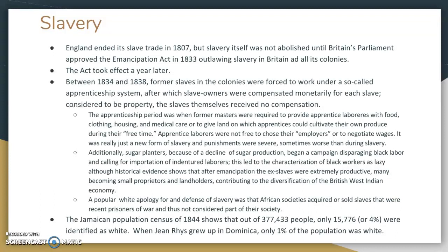Another thing you need to understand is that what Antoinette experiences in Wide Sargasso Sea is very real — the idea of being an outcast as a white woman. The Jamaican population census of about 1844 shows that out of 377,433 people, only about 4% identified as white. That's a very small number and really does contribute to this idea of alienation for Antoinette. Jean Rhys as well, when she grew up in Dominica, only 1% of the population was white, so it really lends itself to white people being outcasts.